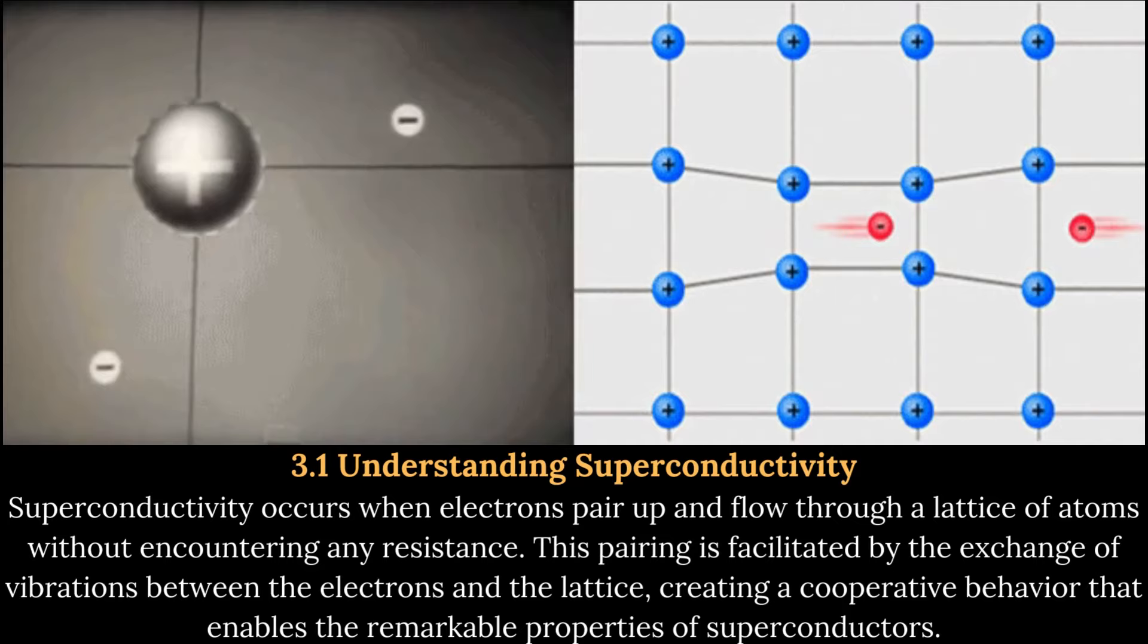Ethical Implications of Quantum Levitation. Impact on Employment and Industries: As with any disruptive technology, quantum levitation raises ethical considerations. The potential automation of certain jobs through levitating systems could result in changes to employment landscapes. It is important to carefully navigate these transitions, ensuring that workers are provided with opportunities for retraining and support.